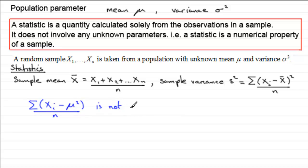So this one is not a statistic because it's got the population parameter μ in it. Okay. So we'll just say that this is not a statistic. Why? Because it depends on the population mean μ.